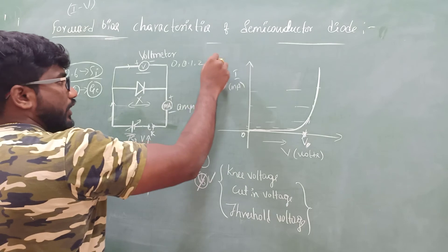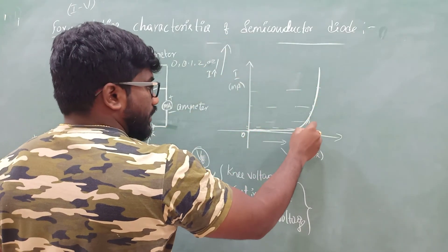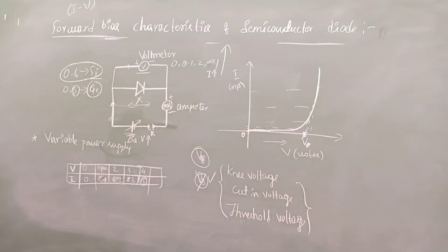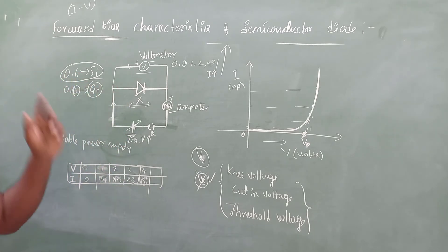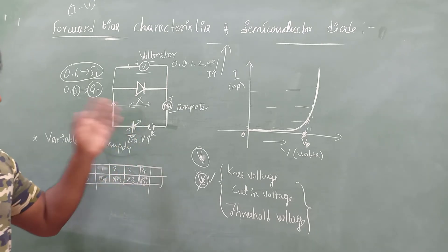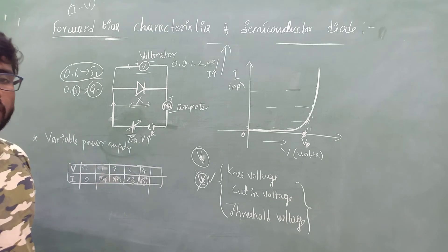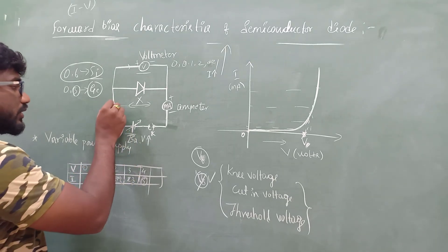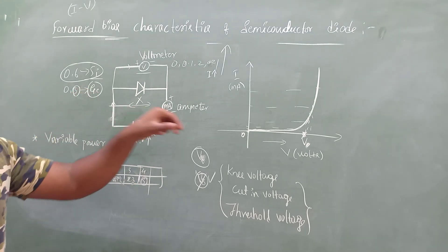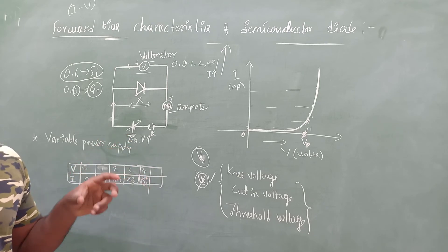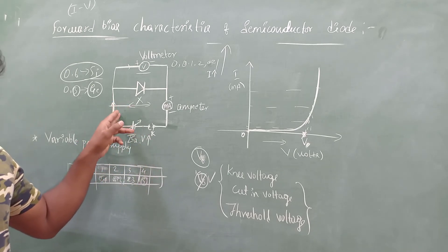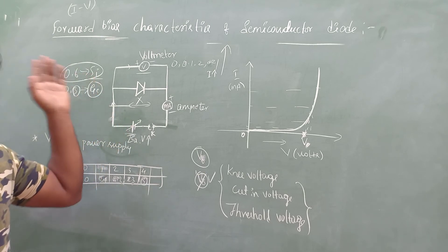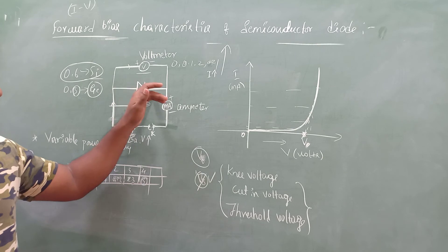When you give 0.3V for germanium there is a large change in the value of current — it starts to conduct and the conduction process increases rapidly. Similarly for silicon: you need to vary the battery or connect a rheostat to adjust the voltage. When you further increase the voltage past 0.6 volt, the silicon semiconductor will start to conduct — meaning it will allow electric current to pass through the circuit.